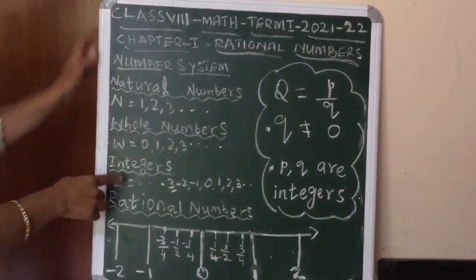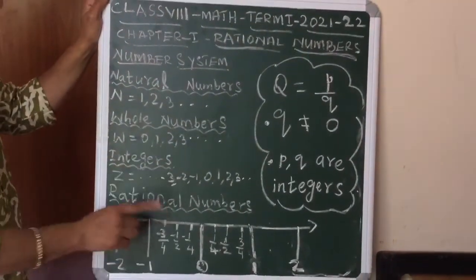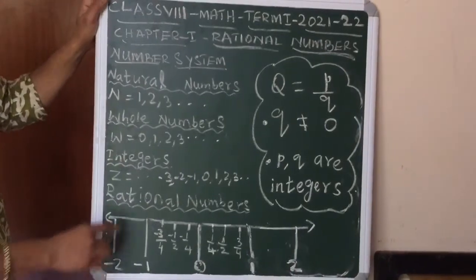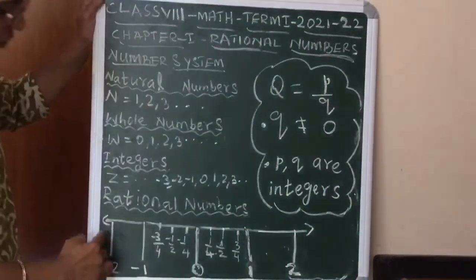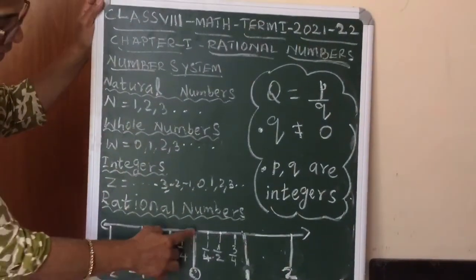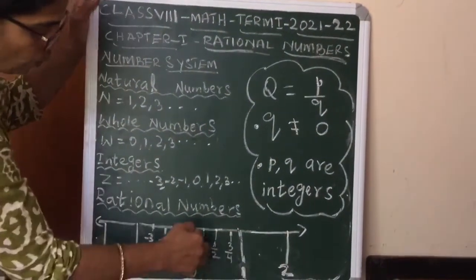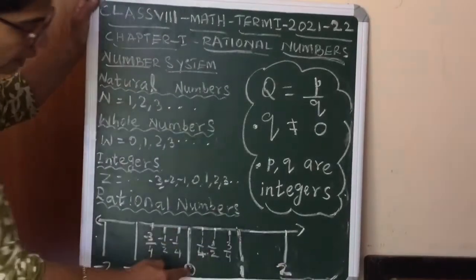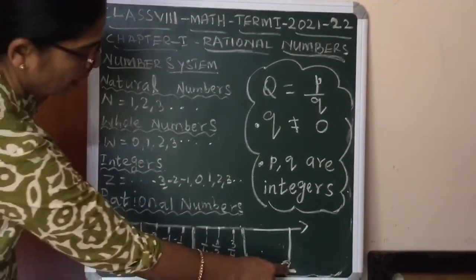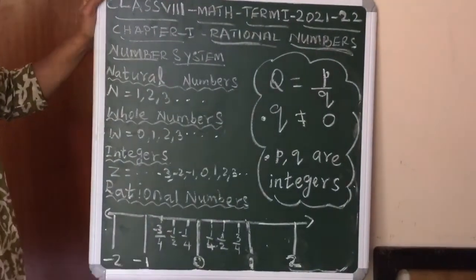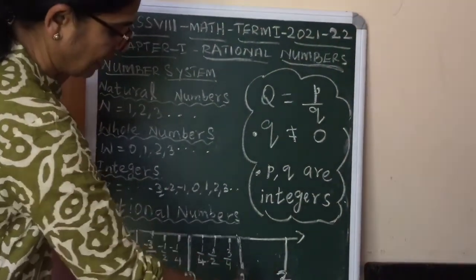The next extension of the number system is rational numbers, which we are going to study now. Consider the number line of integers — 0 in the middle, +1 and +2 on the right, and -1 and -2 on the left. These are all integers — they are whole numbers.